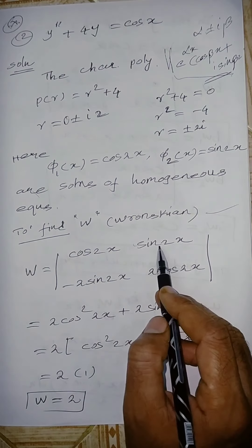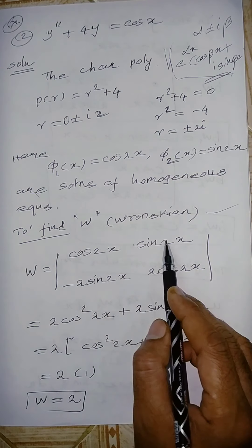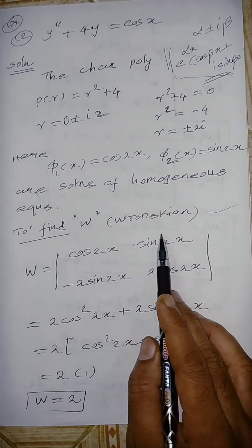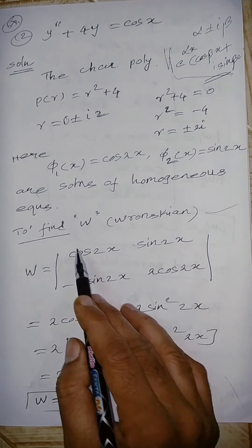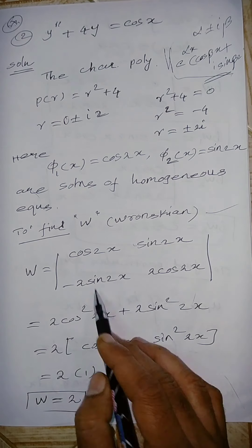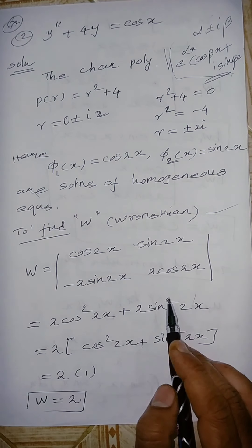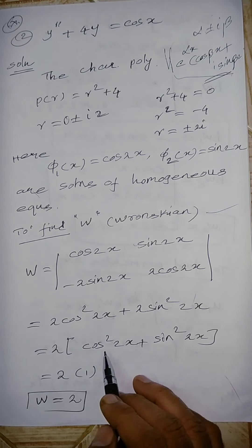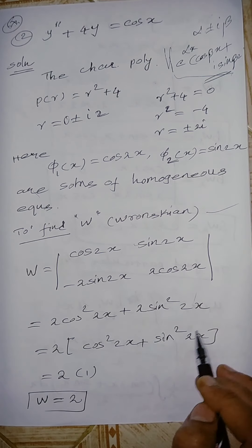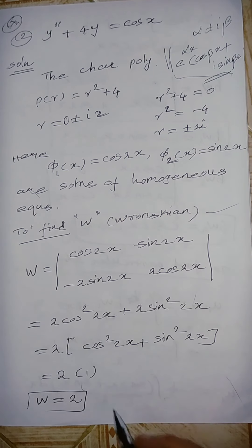Now compute the Wronskian W = det[cos 2x, sin 2x; −2 sin 2x, 2 cos 2x]. By cross multiplication: 2cos²2x + 2sin²2x = 2·1 = 2. So the Wronskian W = 2.